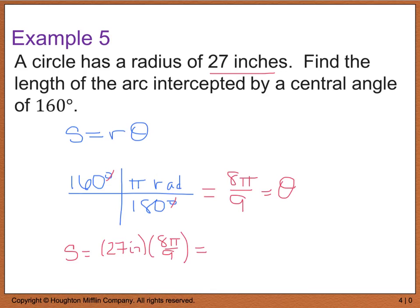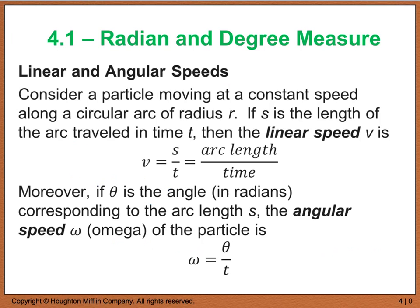So I know that s is going to equal 27 inches times 8 pi divided by 9. And this will give me, 9 goes into 27, 3 times 3 times 8, which will be 24 pi. Or this is approximately equal to 75.4. And my unit, remember arc length, I'm looking for a length, so my unit then would be inches.